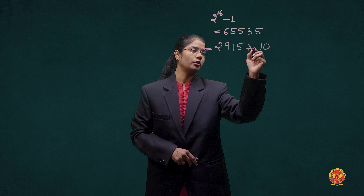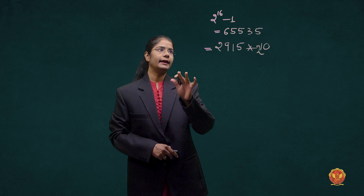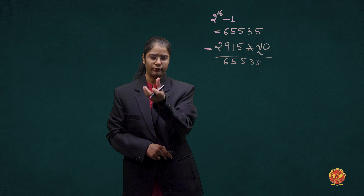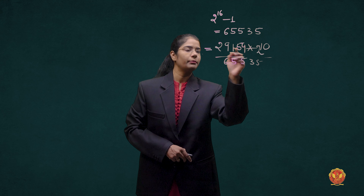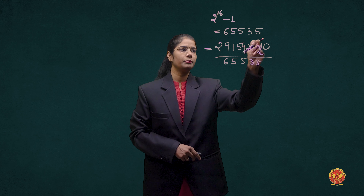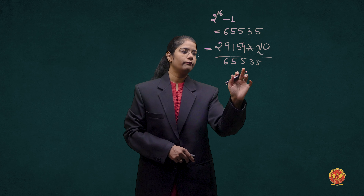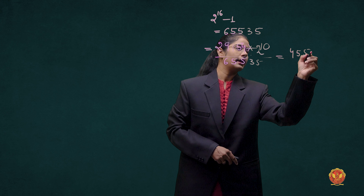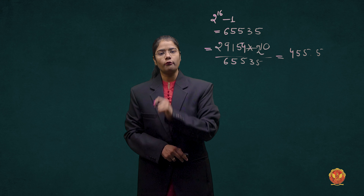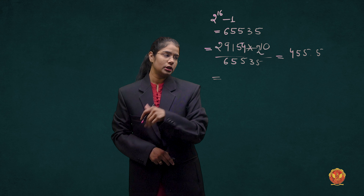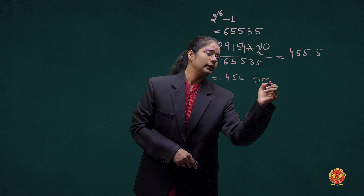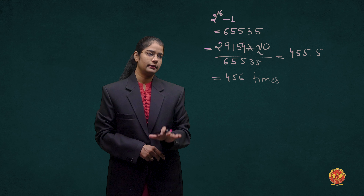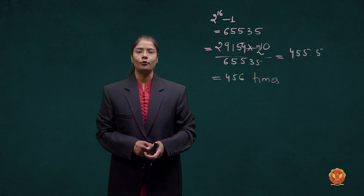K is 2 raised to the power of 10. We divide the file size: 29154 KB equals 29154 × 2^10 bytes, divided by 65535. The file given was 29154 KB. We calculate this to be approximately 455.5, which we round up to 456 times. So the DMA controller needs to take control of the bus 456 times.